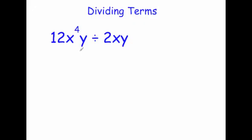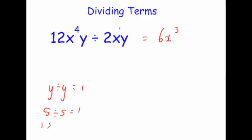Sometimes the expressions you're dividing have more than one letter. What you do is treat them one at a time — start with the numbers, then deal with the x's, then the y's. For example, 12x to the power of 4 times y divided by 2x times y: 12 divided by 2 is 6; x to the 4 divided by x (which is x to the 1), take away the powers — that's x cubed; and y divided by y equals 1, so that just cancels out, giving 6x cubed.